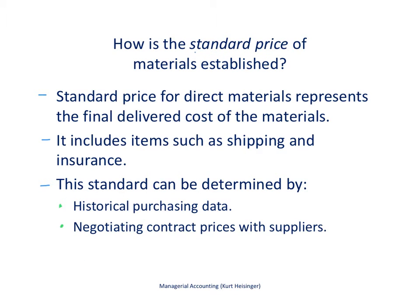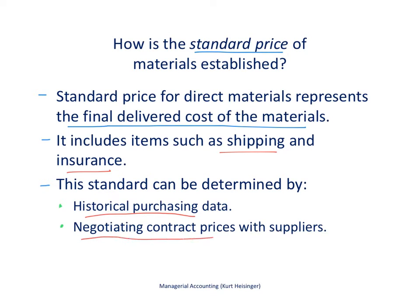We also need to establish a standard price for the materials needed — what we expect to pay our suppliers and vendors for the direct materials used in production. The standard price is the final delivered cost of the materials, including shipping, insurance, and of course the cost of the materials themselves. We can look at historical information or talk to our purchasing agents to find out what prices they are negotiating with suppliers and what they expect to pay this coming month or year.